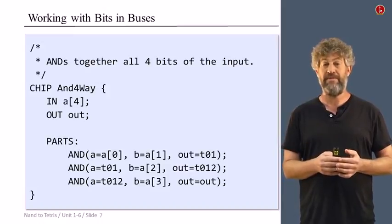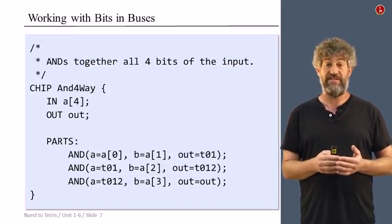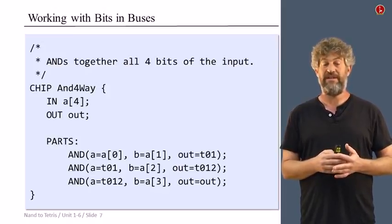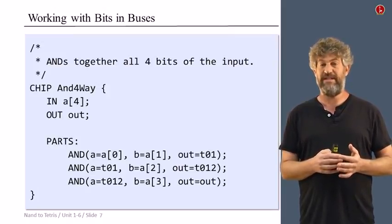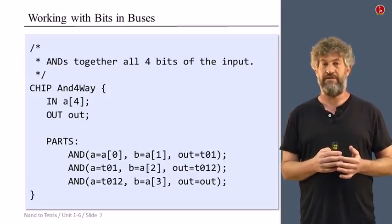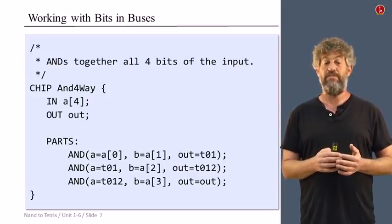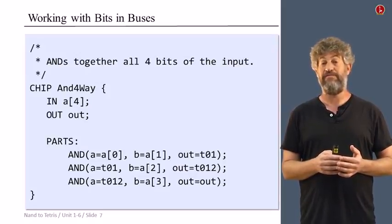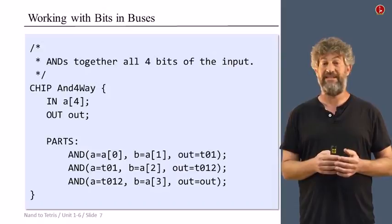In the next project, you're going to have a bunch of chips that actually that's what they do. They take a bunch of bits in the bus and just converge them and mash them together into a single value, and we call this multi-way chips. We call this kind of chip here an four-way that takes four bits and adds them together.